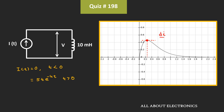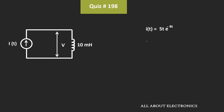So let us differentiate this expression and find the value of t. If we differentiate i(t) = 5t·e^(-4t), then di/dt equals 5·e^(-4t) plus 5t·e^(-4t)·(-4), which gives di/dt equals 5·e^(-4t) minus 20t·e^(-4t).